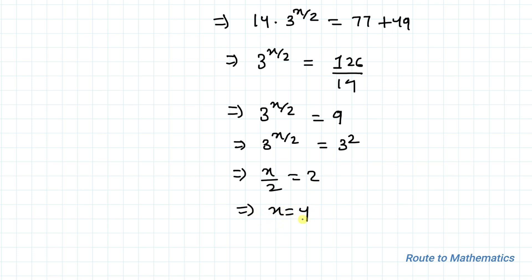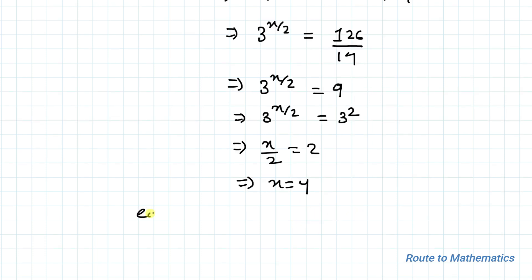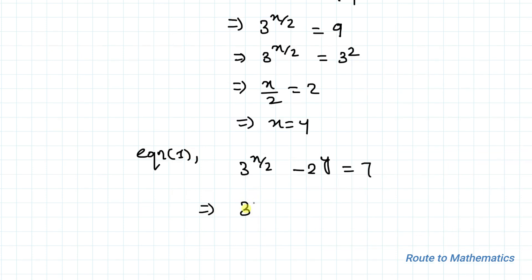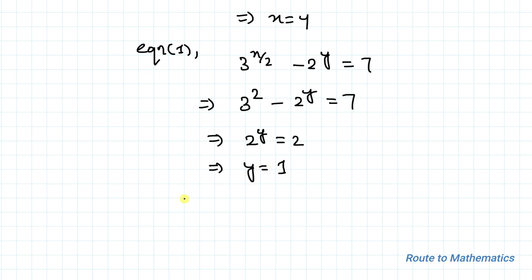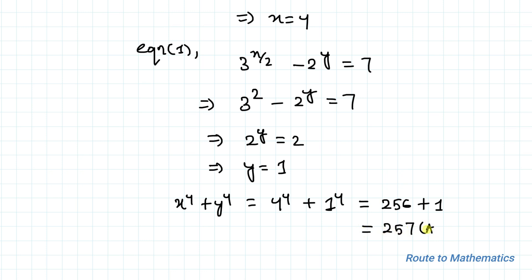With x = 4, substituting into equation 1: 3² − 2^y = 7, so 2^y = 2 and y = 1. Therefore x⁴ + y⁴ = 4⁴ + 1⁴ = 256 + 1 = 257. That is our answer.